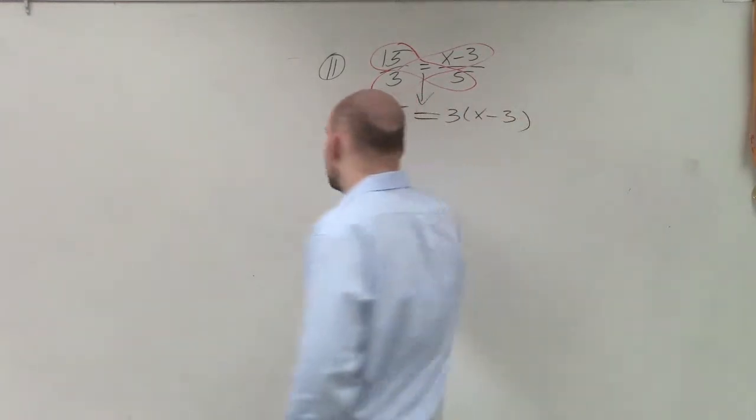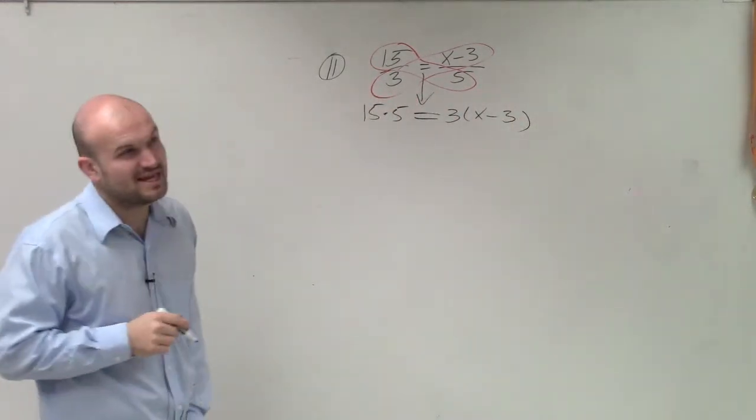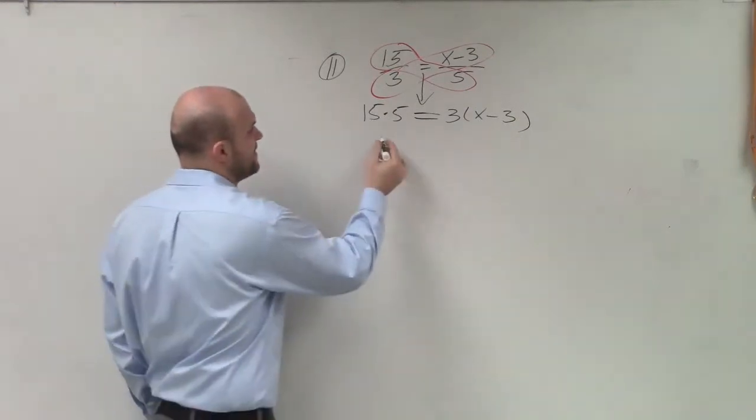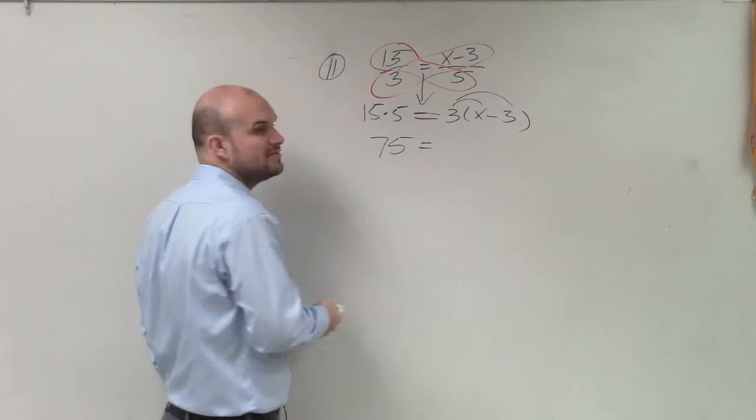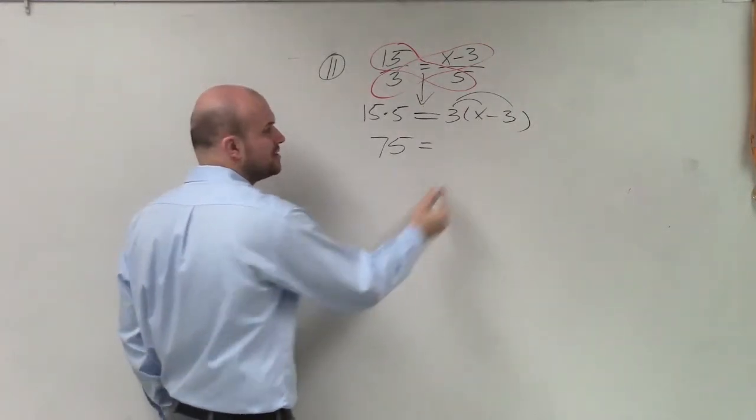So 15 times 5 - 5 times 10 is 50, 5 times 5 is 25, so that will be 75. Here, the reason why I put this in parentheses is so I can make sure I apply distributive property.